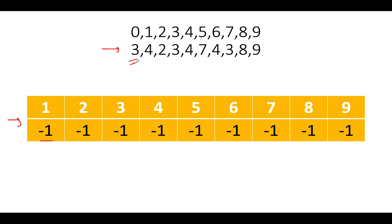The first value we see is three. We check the last occurrence index of three - it is still minus one, meaning we haven't seen three in the past, so we update the index to zero. Next we see four; last occurrence is minus one, so we update it to one. Next we see two; two hasn't occurred in the past, so we update the index to two.